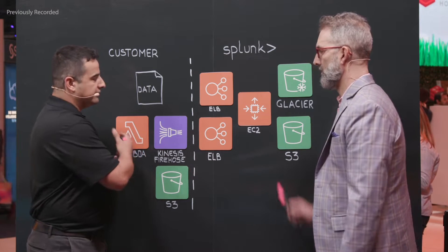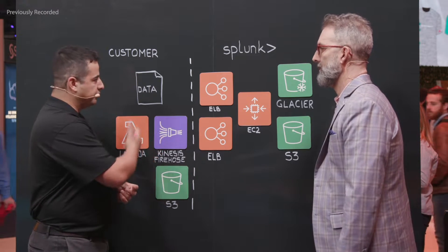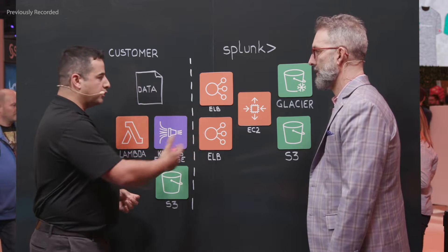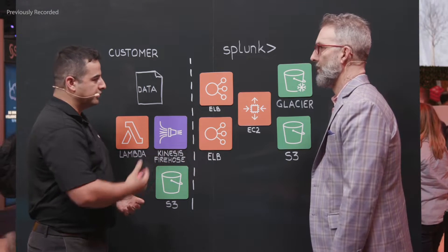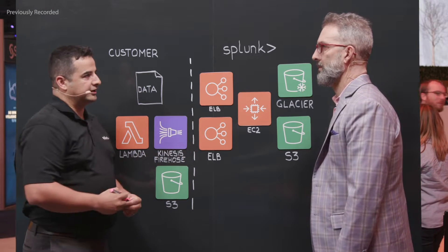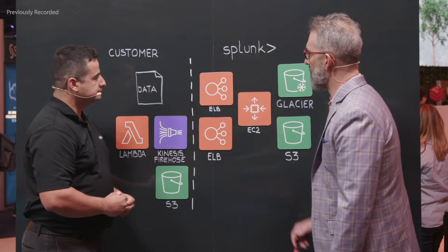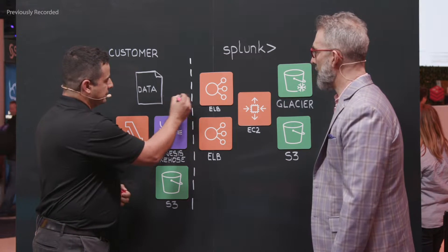So we can send or collect data from AWS services, also their data whether it be through a forwarder, or again through these AWS services natively into Splunk. So let's just draw that up here and show these data paths.